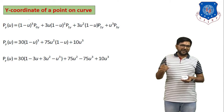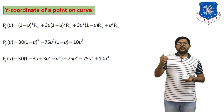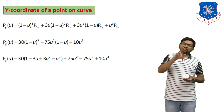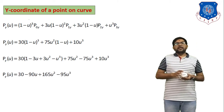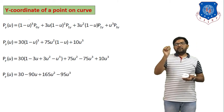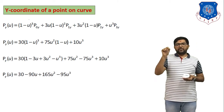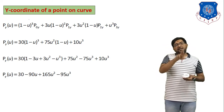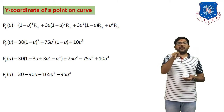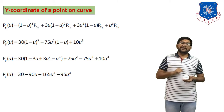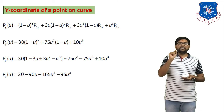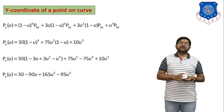Simplifying: expand (1−u)³ and multiply 30 inside the bracket. So: 30(1 − 3u + 3u² − u³) + 75u² − 75u³ + 10u³. Multiplying 30 through gives: 30 − 90u + 165u² − 95u³. This is the simplified y-coordinate equation.